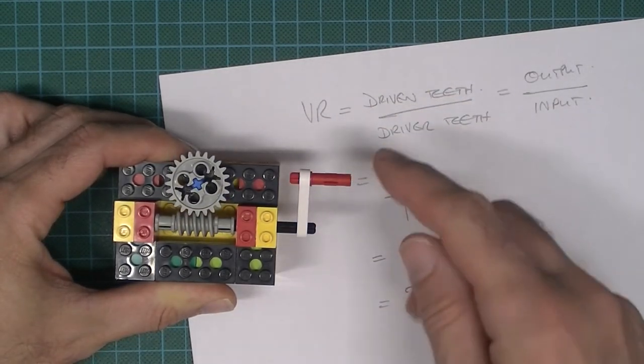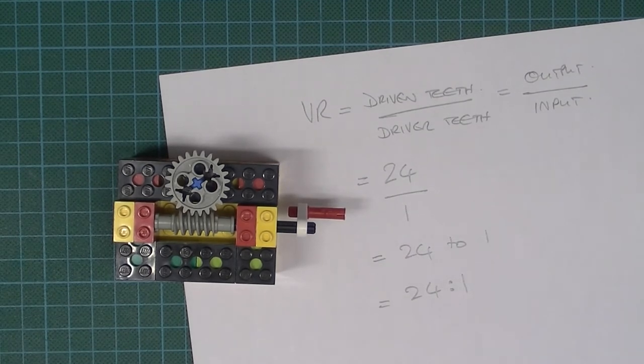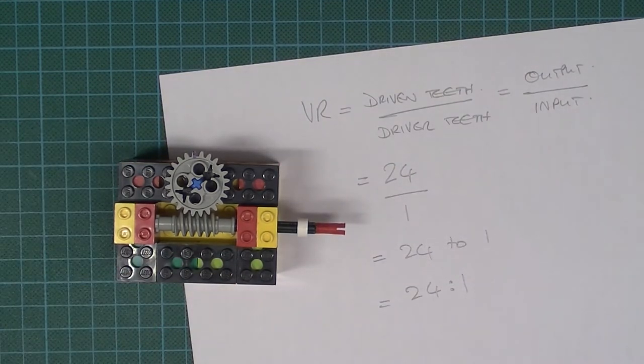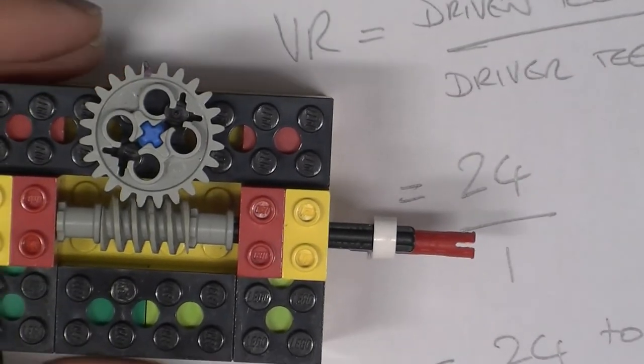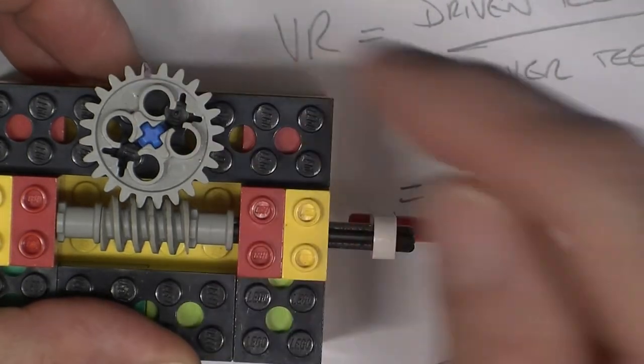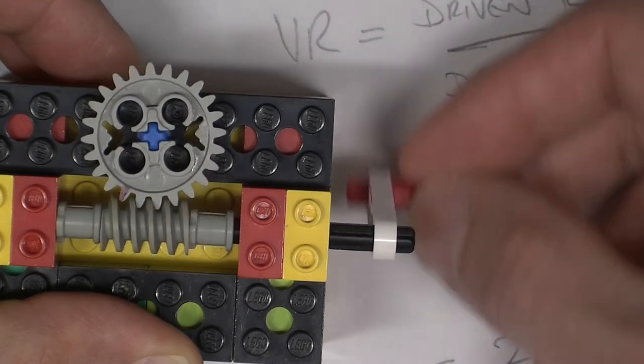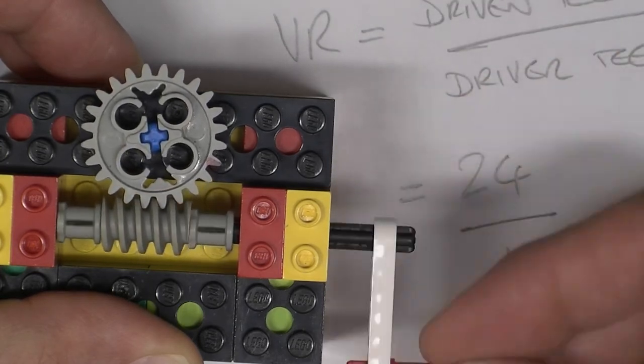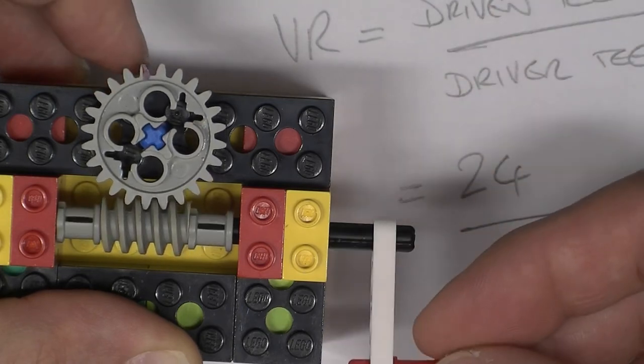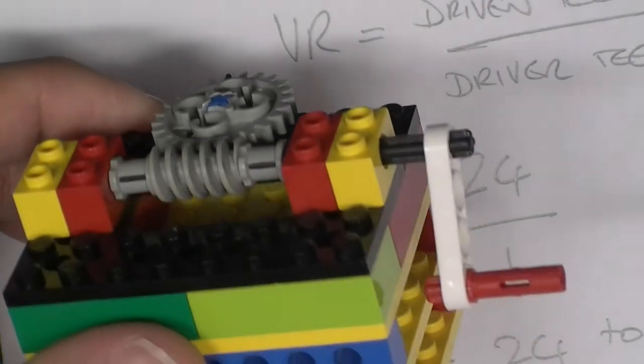In fact, we could even do that, couldn't we? So let me just mark with a pen. Let's put a handle down there, let's mark the output. So that black mark there, which hopefully you can see if we zoom in a little bit, that is starting there. So we're going to turn the handle 24 times, so it's going to go around and then hopefully it's going to end up there. So 1, 2, 3, 4, 5, 6, 7, 8, 9, 10, 11, 12, 13, 14, 15, 16, 17, 18, 19, 20, 21, 22, 23, and 24. So it ends up where we started off with 24 revolutions of the input. Hopefully that's clear.